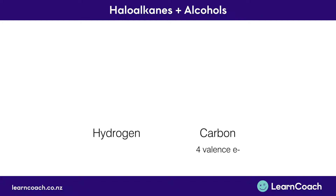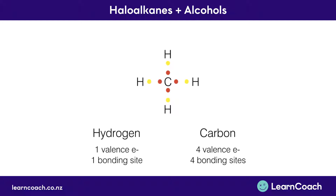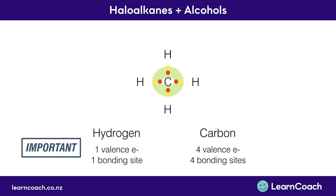Carbon has four valence electrons, shown here in red, giving it four bonding sites. Hydrogen has one valence electron, shown in yellow, so it has one bonding site. The covalent or electrostatic attraction is how carbon and hydrogens are bonded. Hydrogens need two electrons in their first shell and carbons need eight to be stable, and you can see both are stable here. This is the foundation we'll build from.